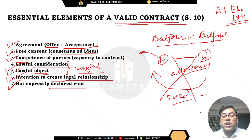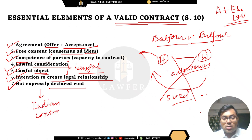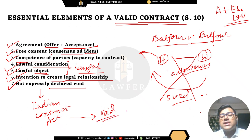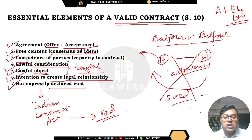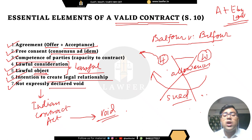The last essential element is that the contract must not be expressly declared void. The Indian Contract Act itself declares certain agreements void — for example, any contract in restraint of marriage, in restraint of trade, or in restraint of legal proceedings. Such contracts are absolutely void. These are the essential elements required for a valid contract; if any are absent, the contract is not valid.